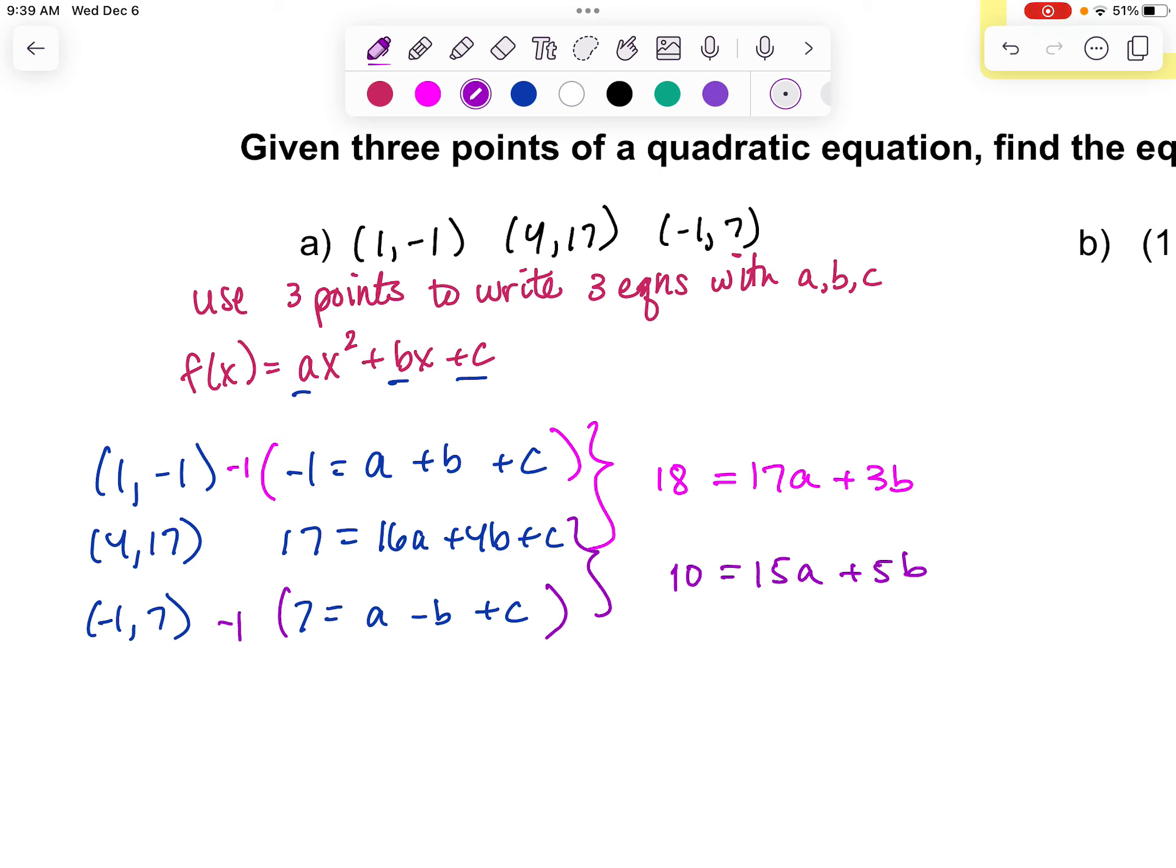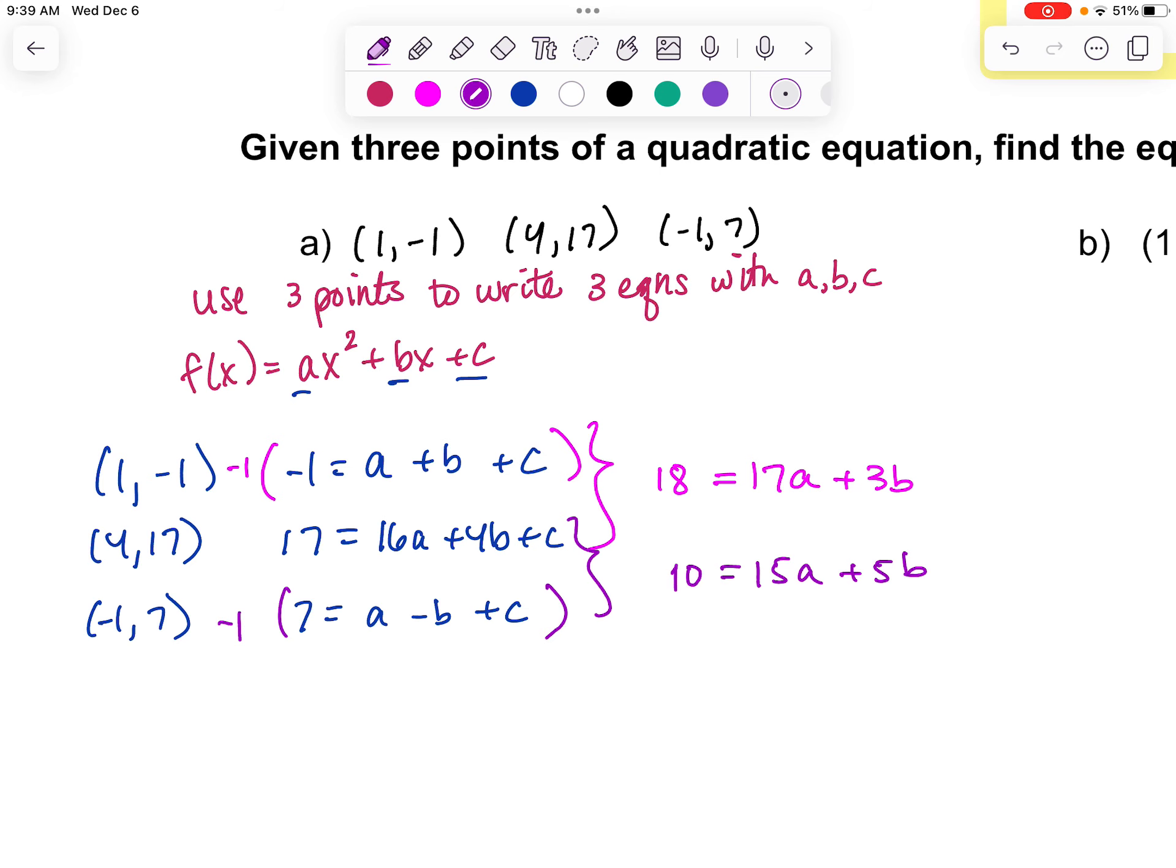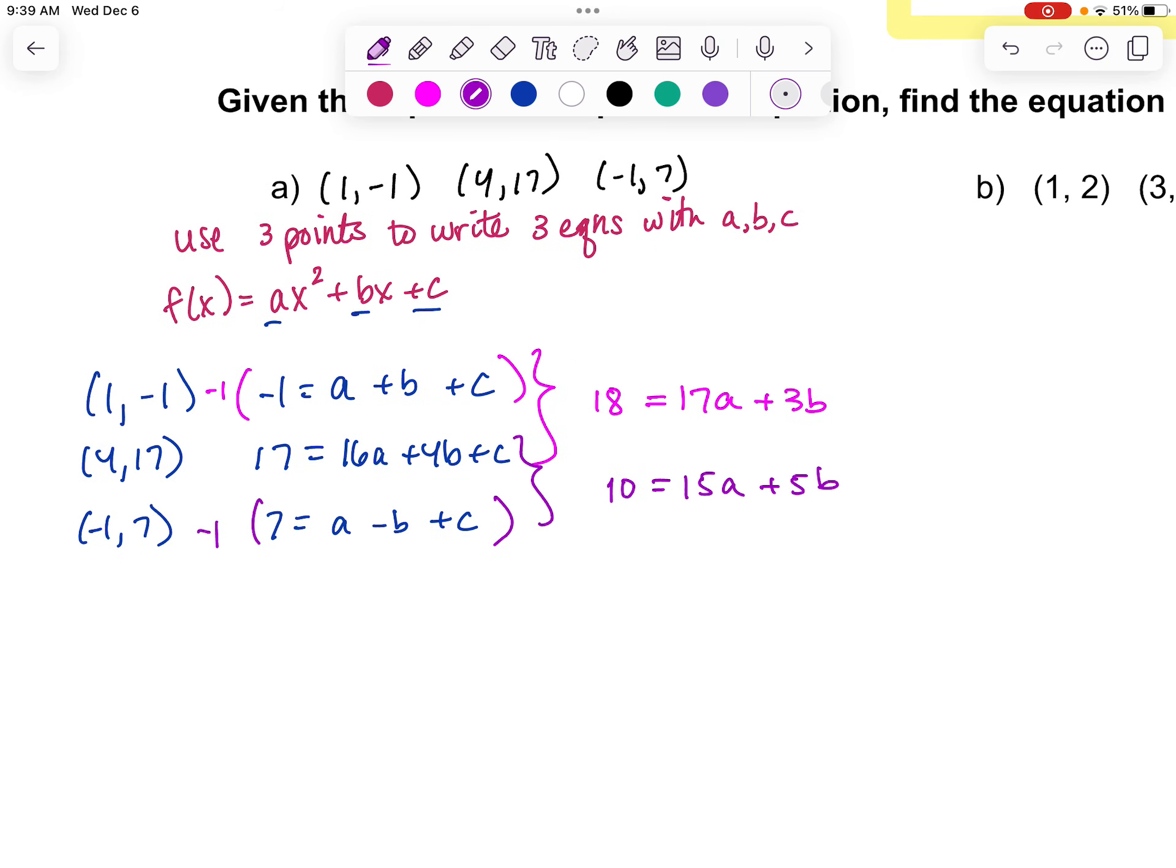And now, at this point, now I'm down to a system with two variables, and I can go ahead and solve for a and b, and then once I get a and b, I can plug back in to solve for c. I'm pretty confident we can solve a system here. If you are looking for the solutions, our a value will be 2, b is negative 4, and c is 1. And then once we have that, we can write this as a function. f of x equals 2x squared minus 4x plus 1.